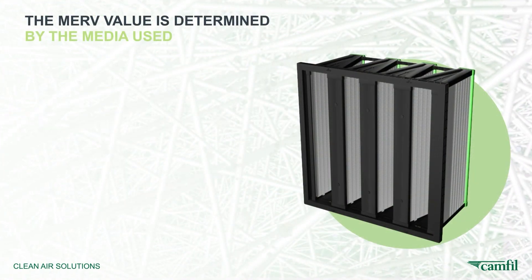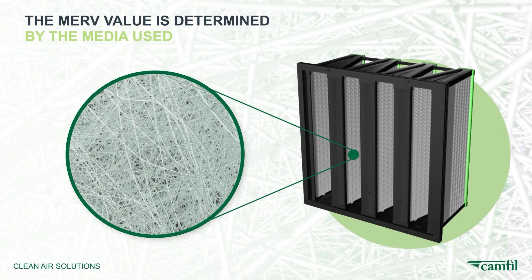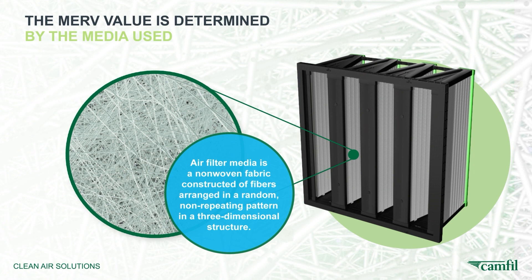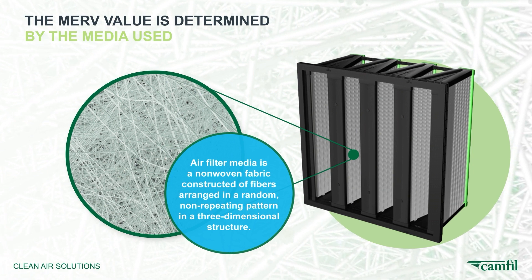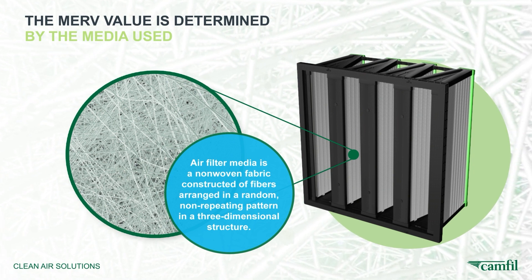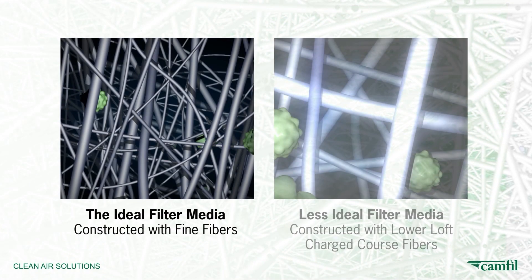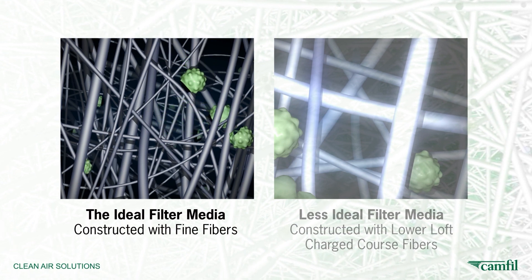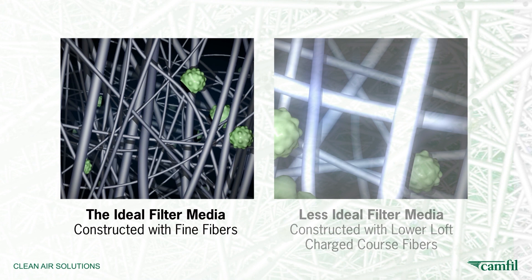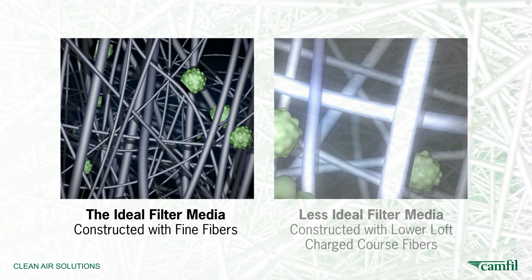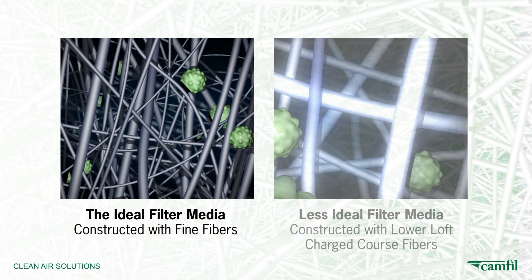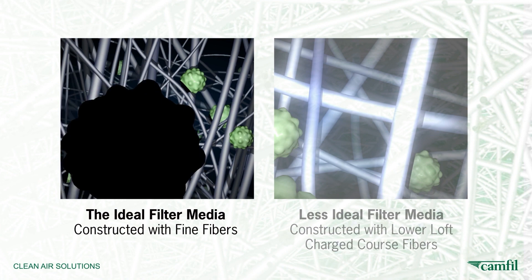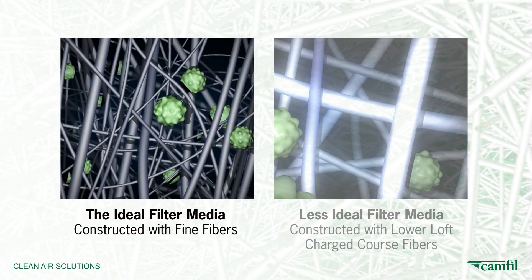The most important component in determining the MERV value of a filter is the media. Media is the name given to the fabric-like portion of an air filter that is configured within the frame that supports it. There are two primary types of media used in the filtration industry. The ideal filter media consists of a large number of fine fibers in a confined space, constructed as a non-woven fabric. Filters utilizing this type of media capture particles through mechanical principles which do not degrade over time. This is the ideal media type to ensure efficiency for the entire service life of the filter and maintain compliance with ASHRAE 170.